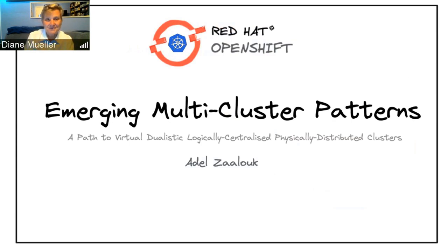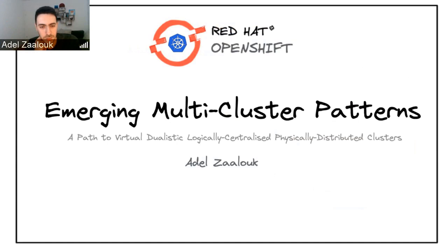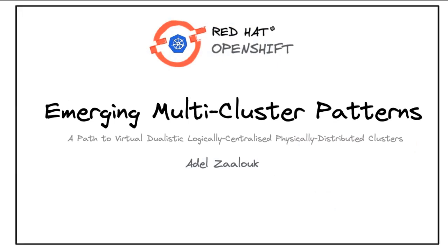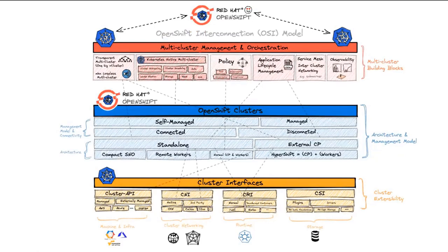I'm Adele Zalouk, a product manager for OpenShift. My experience is a mixture of networking, consulting, development, research, and recently product management. Today I'm going to be talking about multi-cluster patterns. The subtitle is a bit confusing but I'll explain it along the way — there's a path to virtual, dualistic, logically centralized, physically distributed clusters. I wanted to start by mapping our stack onto something like an OSI model, which I'm calling the OpenShift interconnection model.